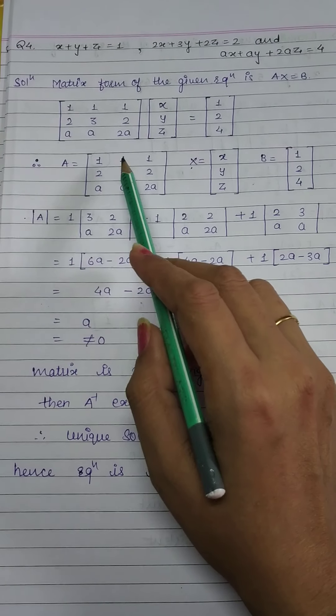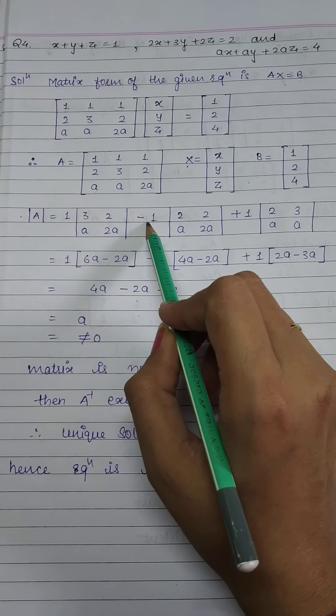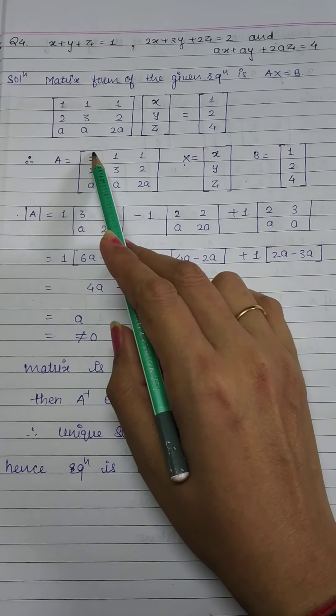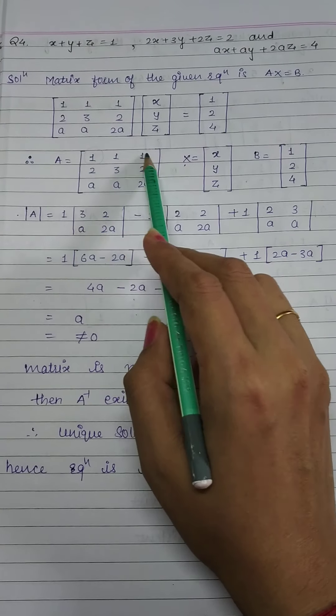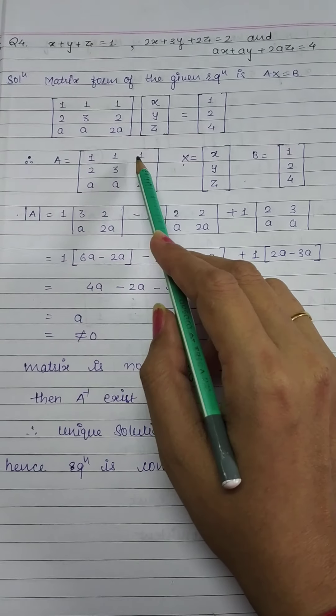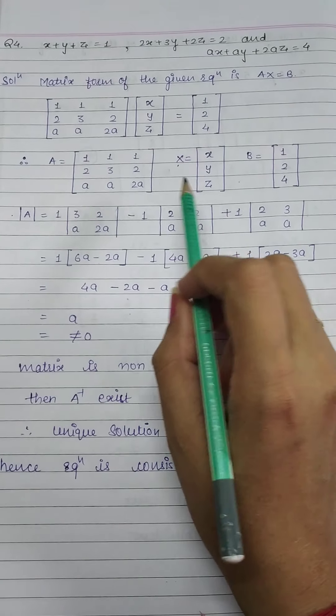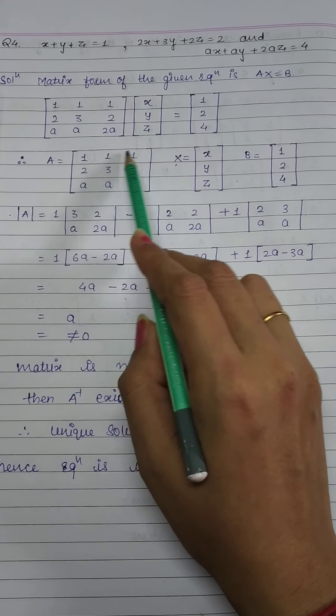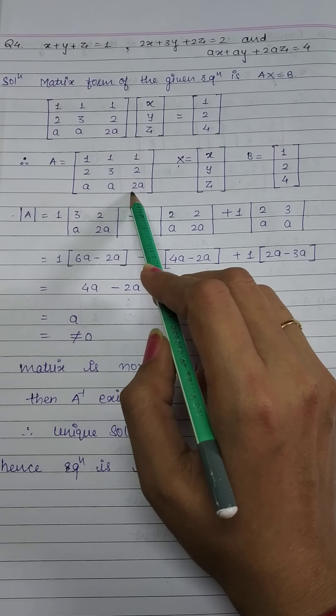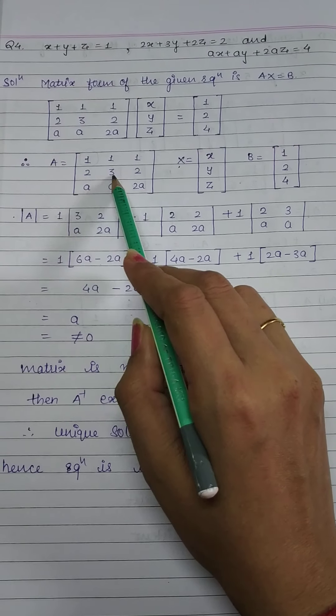We will convert to matrix form. So what will happen in matrix form? This equation is capital Ax equals to b, right? So first of all, let's make a matrix. Then capital x means that the variable is used in that equation and the right side is the constant term. So let's see.